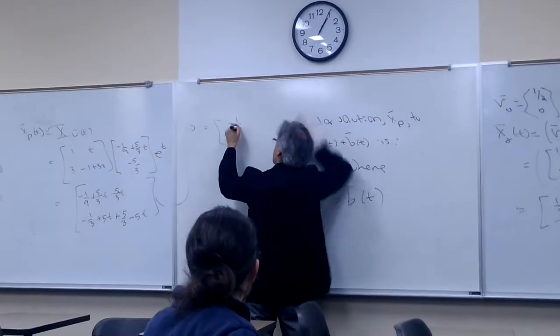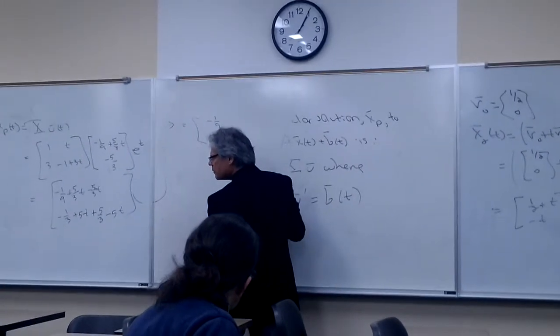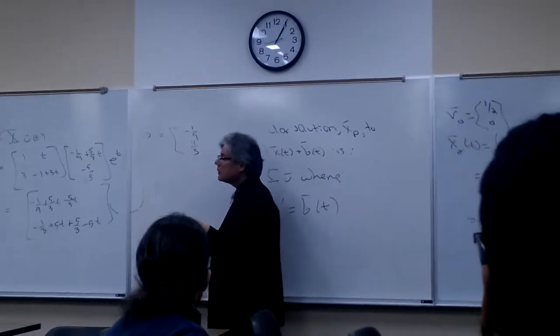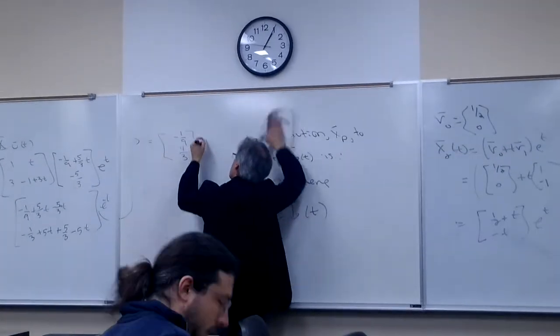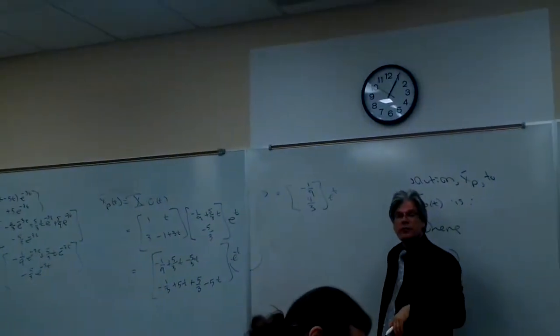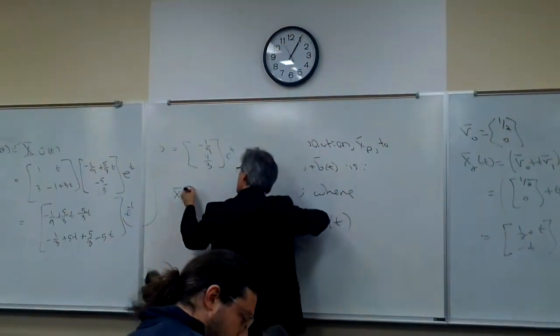And in cleaning up, I guess that leaves me with nothing more than this. Oh, how pretty. Negative 1 ninth and... You said 4 thirds. Period. Oh, you know what, you guys? I made another mistake. I forgot my e to the t. I really did. I don't know. Well, there's my particular solution.